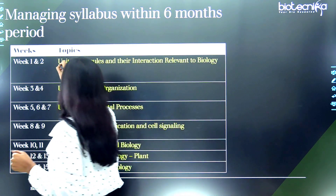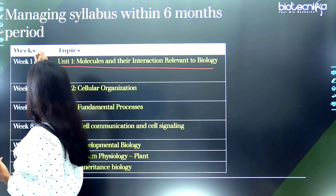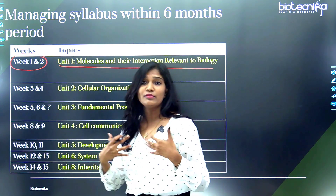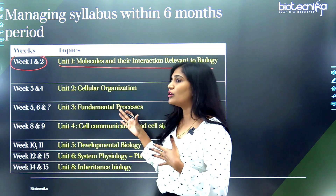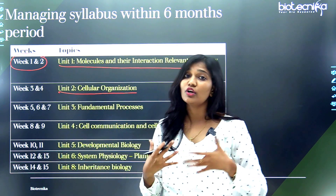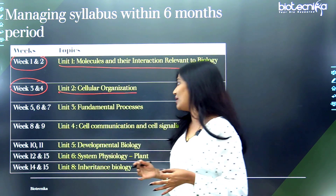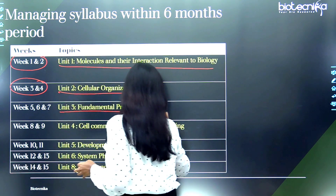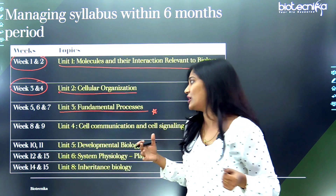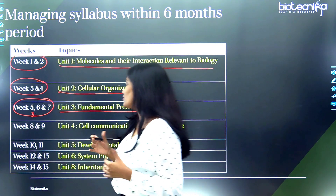The first unit is molecules and their interaction relevant to biology — a very promising chapter. Spend almost two weeks on it: week one and week two. This chapter deals mainly with metabolism, amino acids, protein conformations, and related topics. The next unit is cellular organization, also two weeks: week three and week four. The next is fundamental processes, a very promising chapter, for which I've allocated three weeks: week five, week six, and week seven.